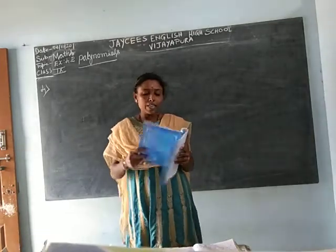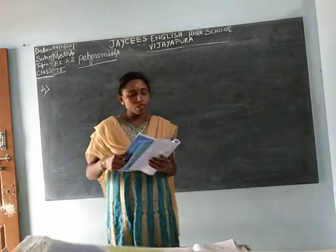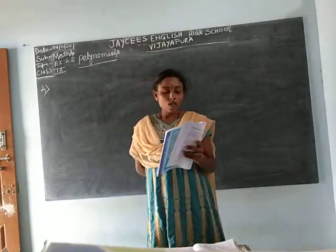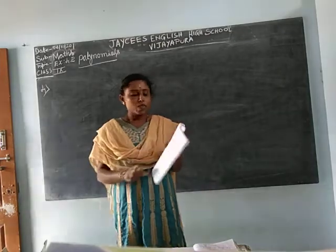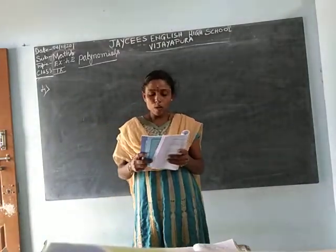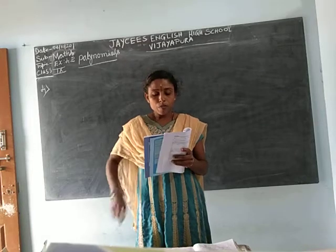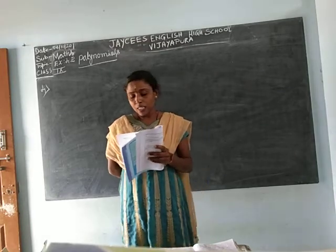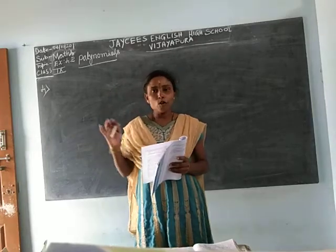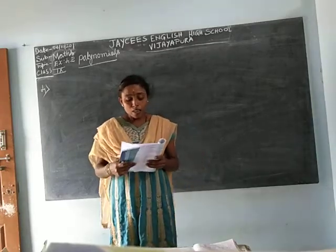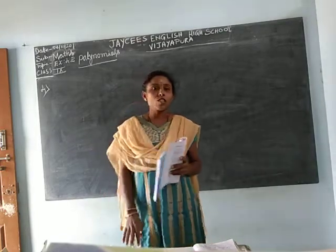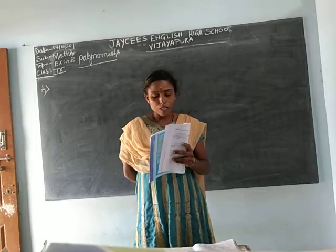This is the 4th main topic. We have already completed 3 main topics — 1st, 2nd, and 3rd. Now the 4th main topic discusses first. Find the zero of the polynomial in each of the following cases. Polynomial means more than one term. We find the zero of the polynomial — the final answer we get is 0, which is called the zero of your polynomial.